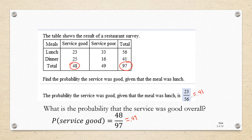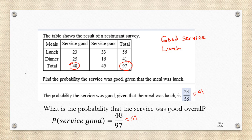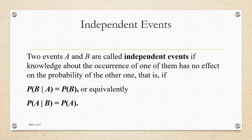0.41 and 0.49 are not equal. So what that means is that knowledge that it was a lunch meal impacted the probability of good service. So we would say that the event of service being good and the event that we had lunch are not independent events.